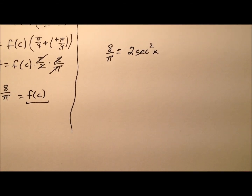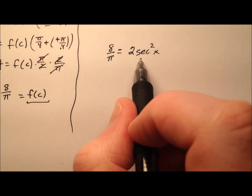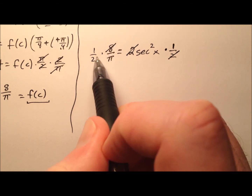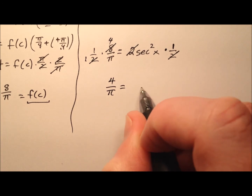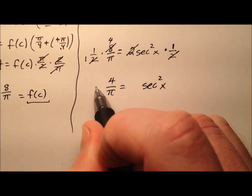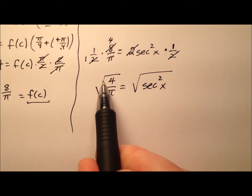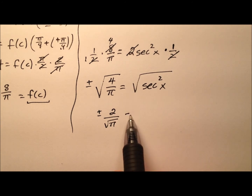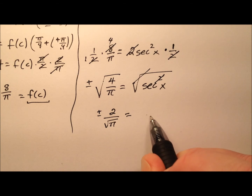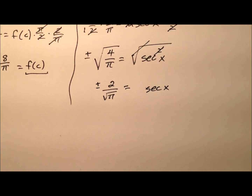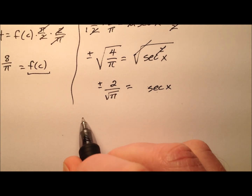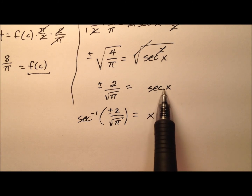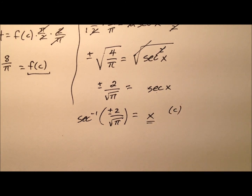Let's go ahead and solve for x, which will give us that c value in our interval. We start by multiplying both sides by 1 half to get rid of the 2, giving us 4 over pi equals secant squared x. Then we take the square root of both sides: the square root of 4 is 2, over the square root of pi, with a plus or minus out front, and that equals the secant of x. So taking the inverse secant of both sides, inverse secant of plus or minus 2 over the square root of pi equals x.